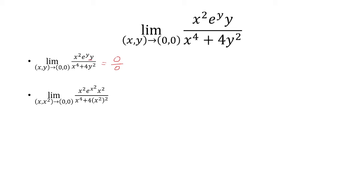So we replace the y's with x squared. And then now we're going to do x squared squared is x to the fourth. x to the fourth plus 4x to the fourth is 5x to the fourth. And then x squared times x squared is x to the fourth. At this point, we can cancel out the x to the fourth, and be left with e to the x squared over 5. If I let x equal 0 now, this is going to 1 over 5.